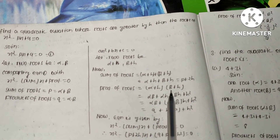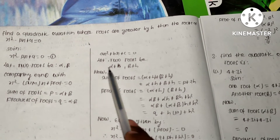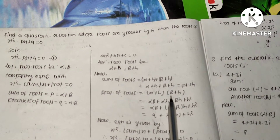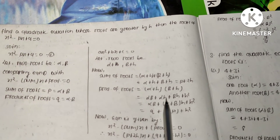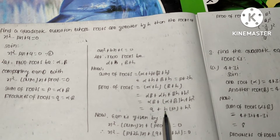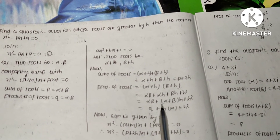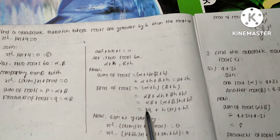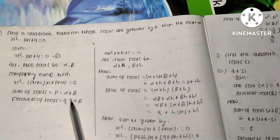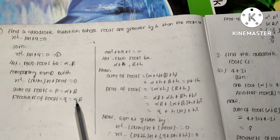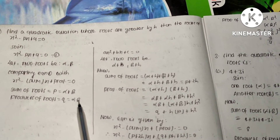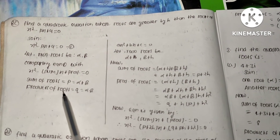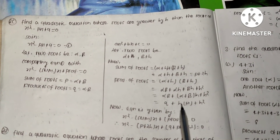Now for the product of the new roots, we multiply (alpha plus h) times (beta plus h), which gives alpha times beta plus alpha times h plus beta times h plus h squared. Substituting alpha times beta equals q and alpha plus beta equals p, the product becomes q plus ph plus h squared.